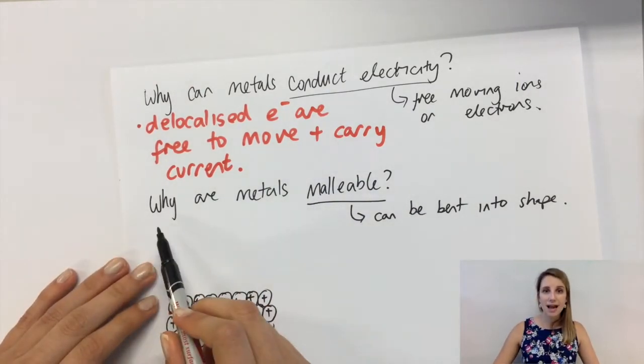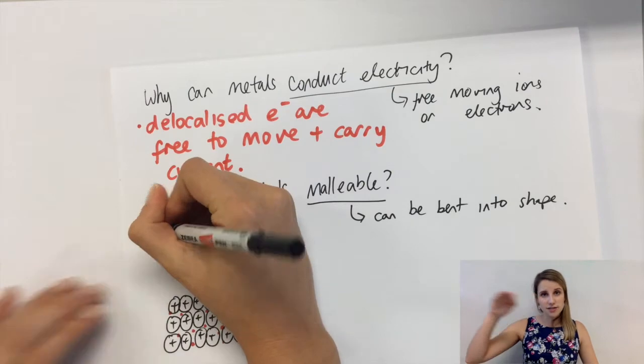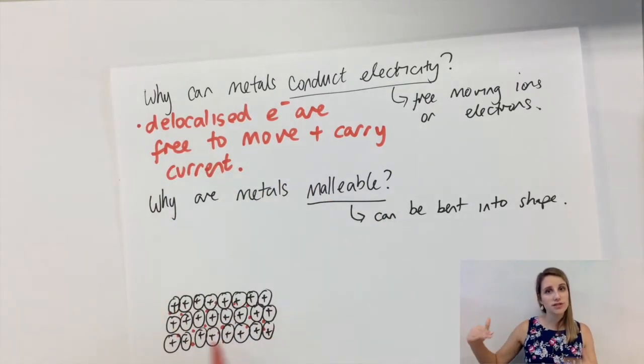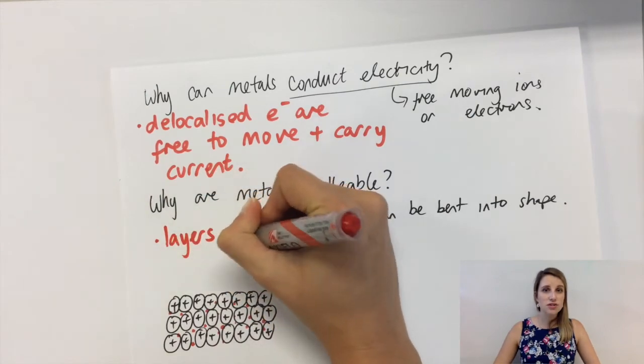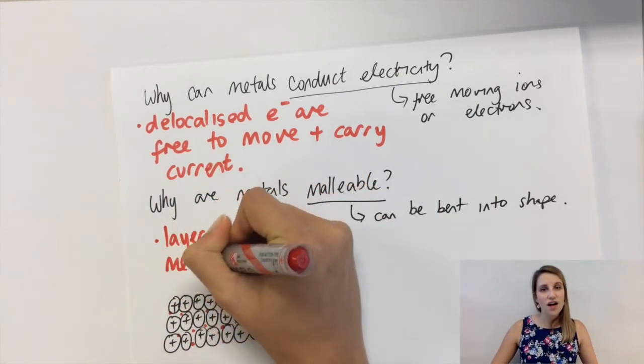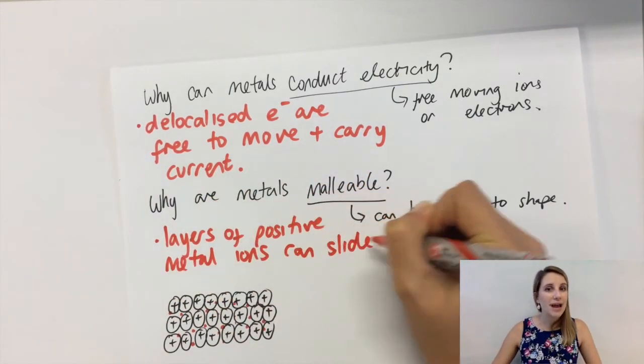In terms of it being malleable, the layers of positive metal ions can slide over each other. It's that ability for those layers to slide over each other that allows the structure to be bent into different shapes.